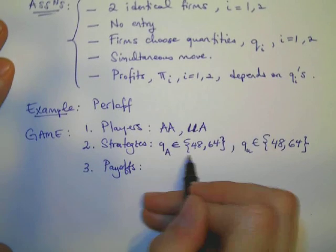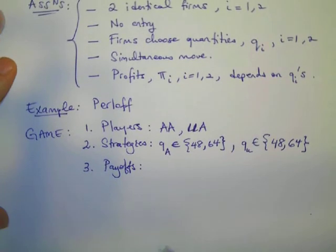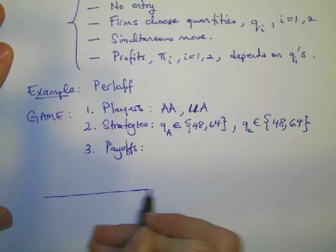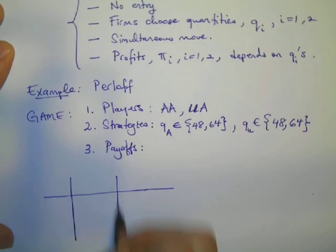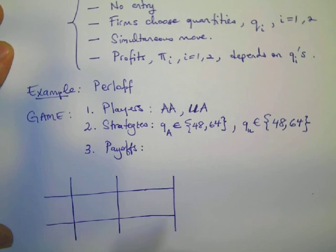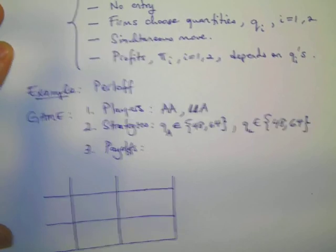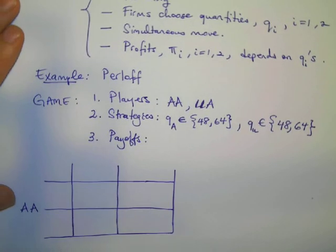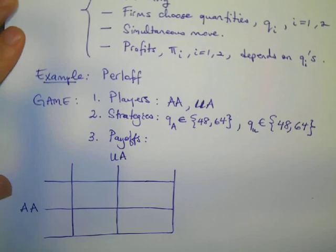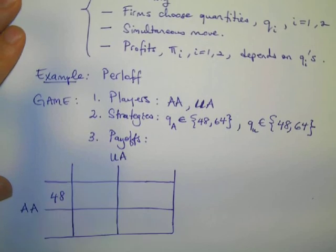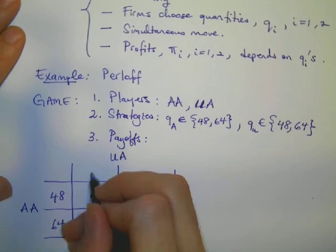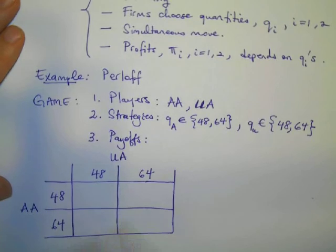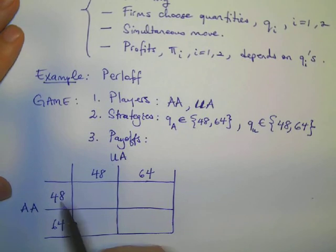And finally, their payoffs will depend on not only their own choices, but each other's choices. And in order to describe their payoffs, I will draw the following matrix. It is a two-by-two matrix. So we have two players. American Airlines will be my row player, and United Airlines will be my column player. American Airlines have two possible strategies available for it. And similarly for United Airlines, two possible strategies available.